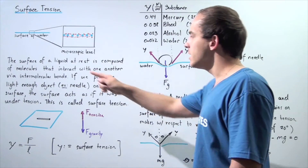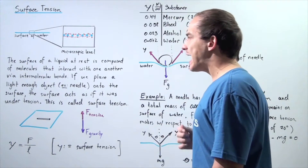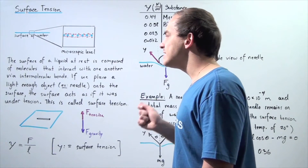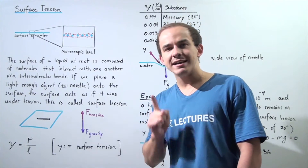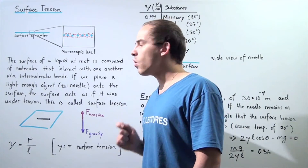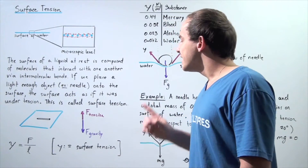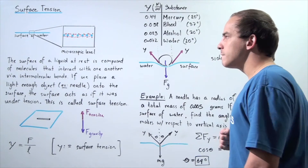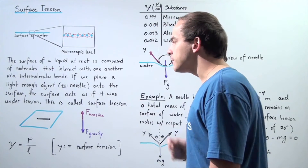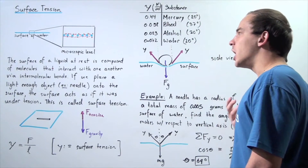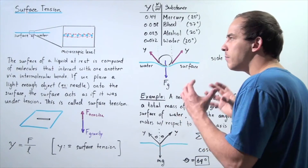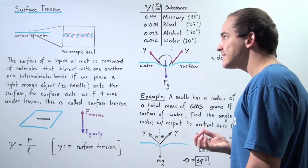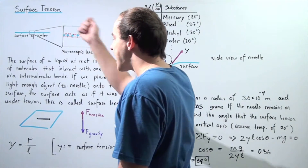The surface of a liquid at rest is composed of molecules that interact with one another via intermolecular bonds. In the case of water, these intermolecular bonds are called hydrogen bonds. If we place a light enough object on the surface of our liquid — let's say a needle — the surface acts as if it was under tension. The intermolecular bonds on the surface create a tensile force known as surface tension.